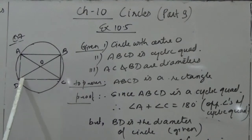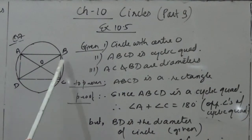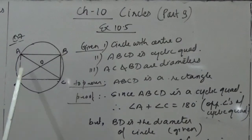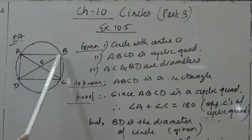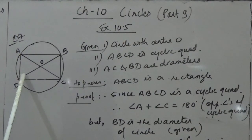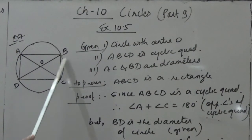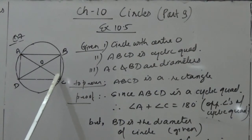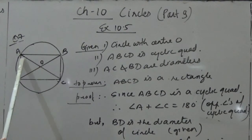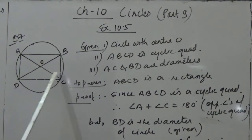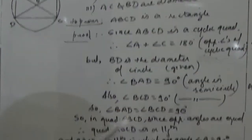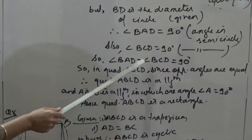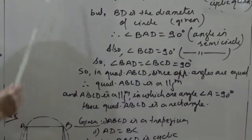Since BD is the diameter of the circle, it forms a semicircle, so angle BAD equals 90 degrees — angle in a semicircle is a right angle. Similarly, since BD is a diameter, angle BCD also equals 90 degrees. So angle BAD equals angle BCD equals 90 degrees — that is the angle in a semicircle.